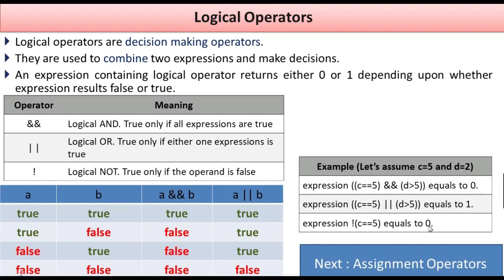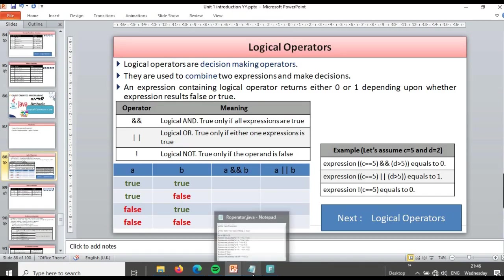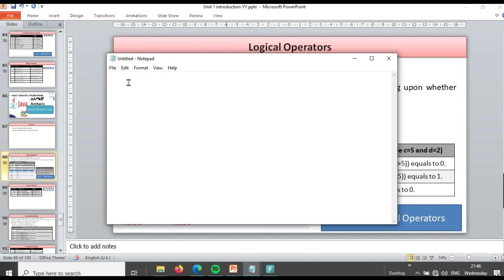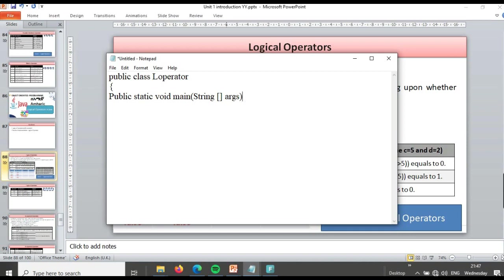Now let's go to the practical implementation. We'll open Notepad to write the code. Create a file, and we'll write the full class. The class name will be LogicalOperator. Inside the class, we define the main function: public static void main with String array args.